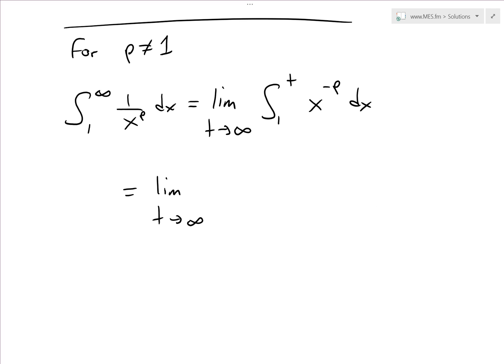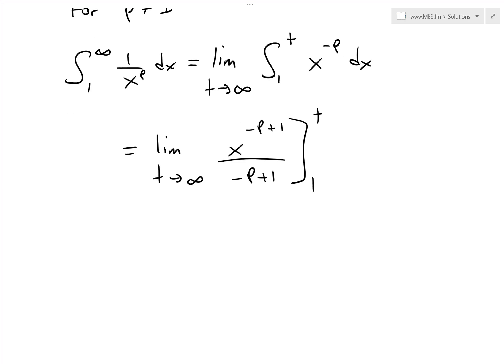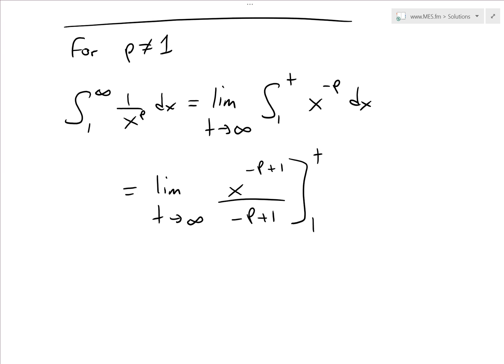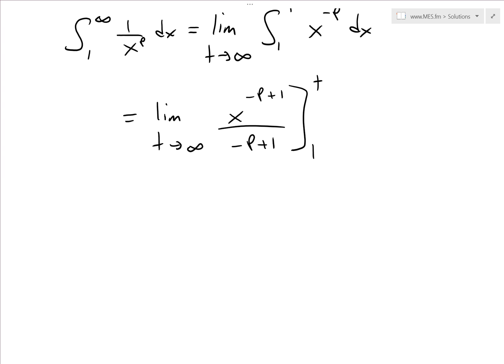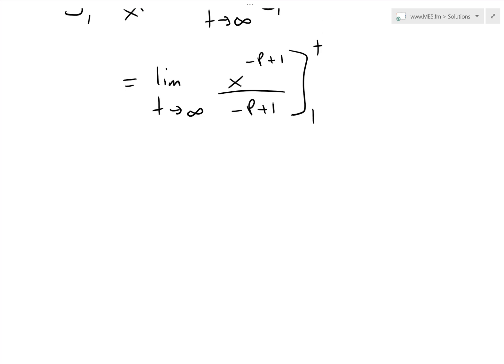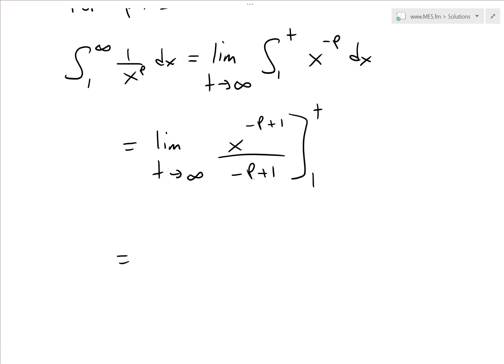We take the limit as t approaches infinity. This is just a power function, so the integral is x to the power of negative p plus 1, divided by negative p plus 1, evaluated from 1 to t. You can see the proof for this integral in the video link below as well on power functions. Now we can continue evaluating.